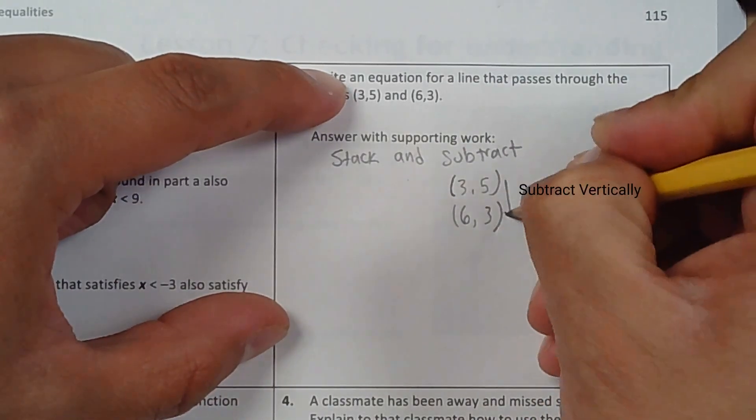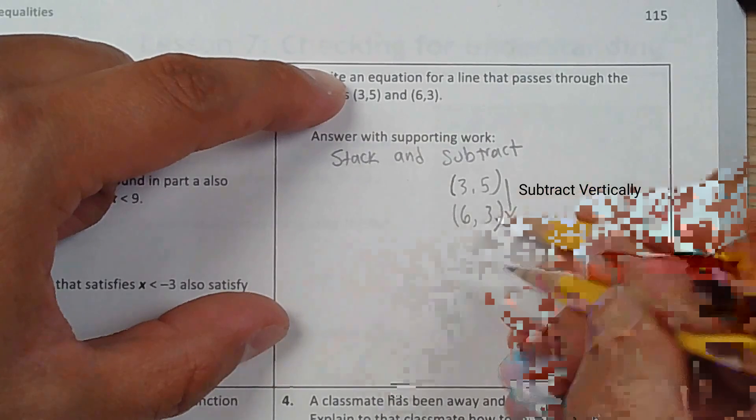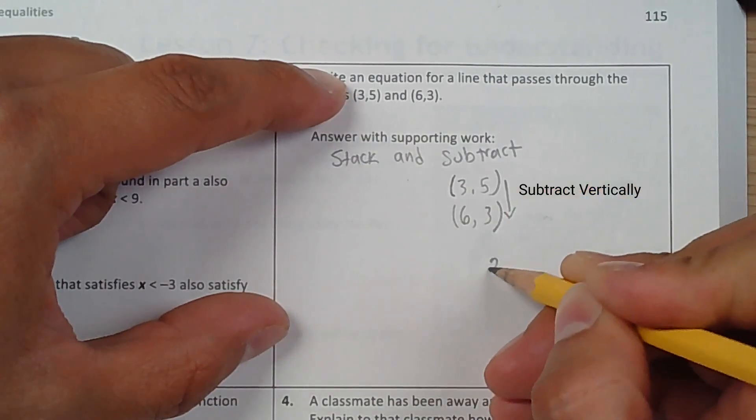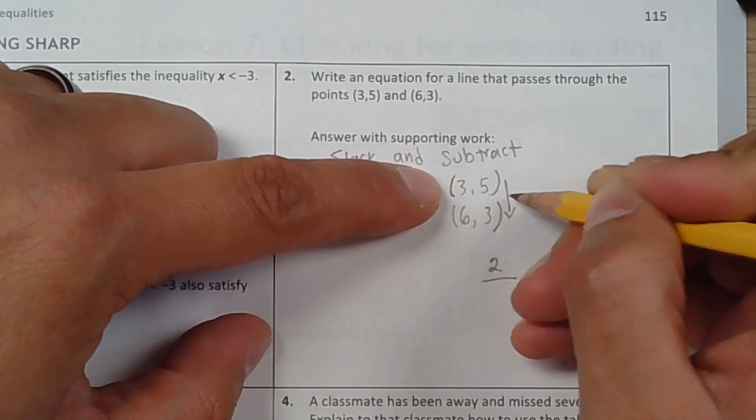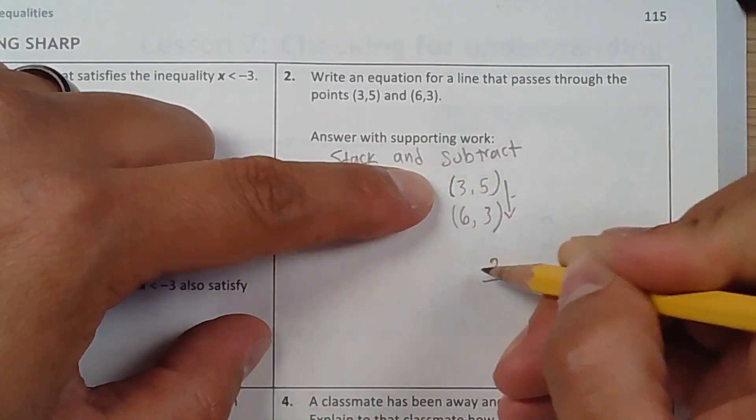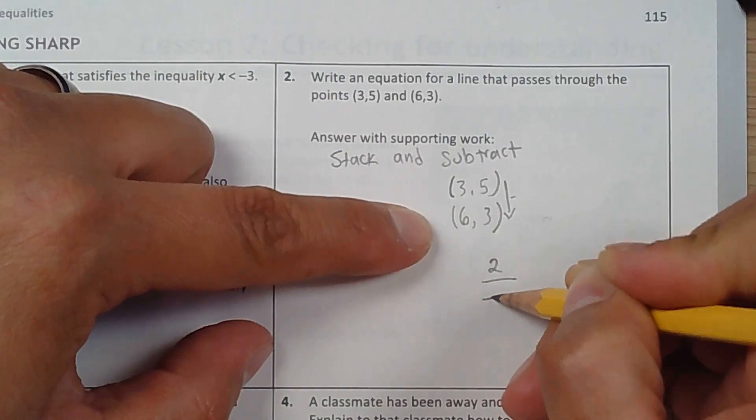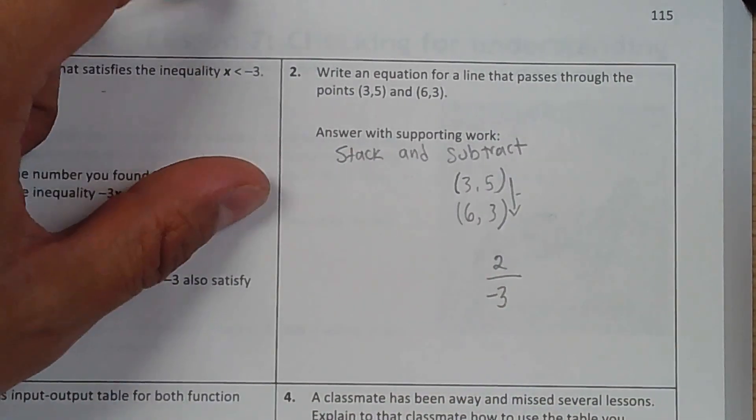Then you're going to subtract vertically. 5 minus 3 is 2, and 3 minus 6 is negative 3. And that's my slope.